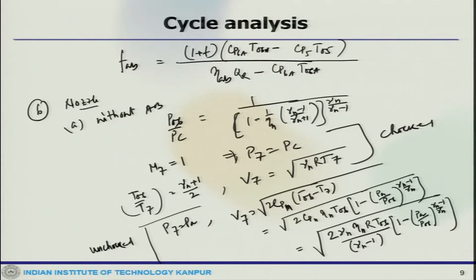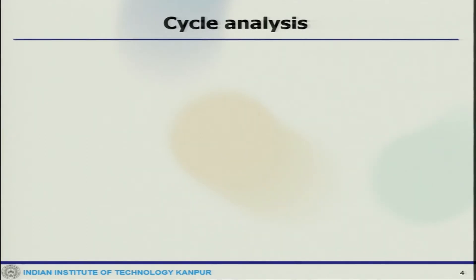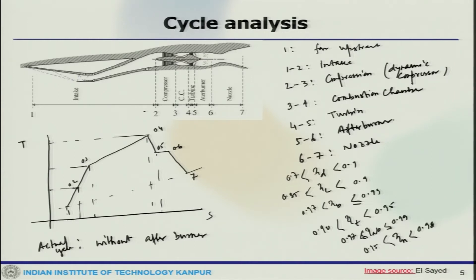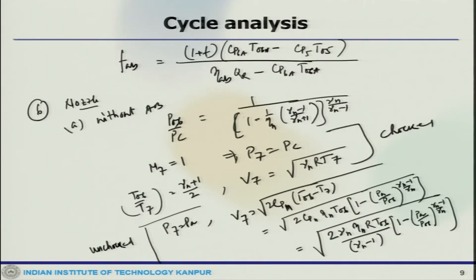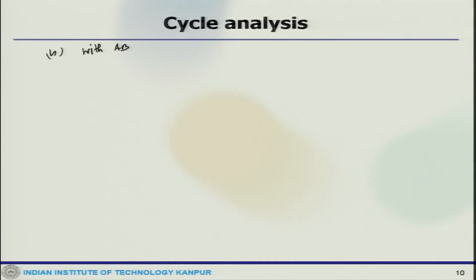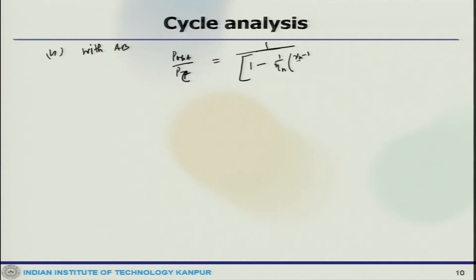This is exactly where we stopped — starting with the nozzle, and there could be two different scenarios. Recalling the T-S diagram, whether you have an afterburner between states 5 and 6 will determine what happens. Now looking at the nozzle with afterburner operative, the expansion process in the nozzle starts from state 06A to state 7, so the pressure ratio between these two would be 1 by (1 minus the critical pressure ratio), eta_n, (gamma_n minus 1) divided by (gamma_n plus 1), to the power gamma_n by (gamma_n minus 1).